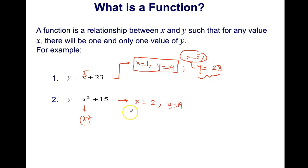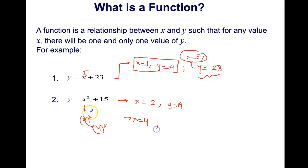If I change x to 4, it becomes 4 squared plus 15, which is 16 plus 15, so y is 31. You can see that for each specific value of x, we get one and only one value of y. These are examples of functions.